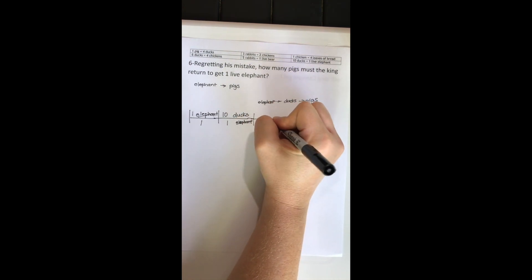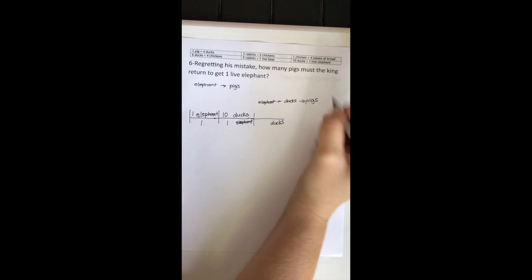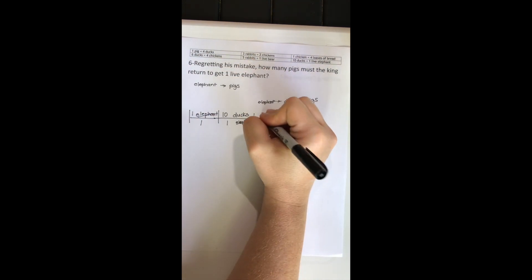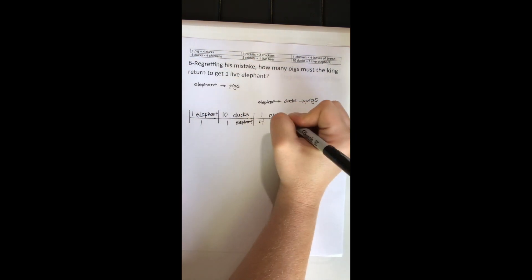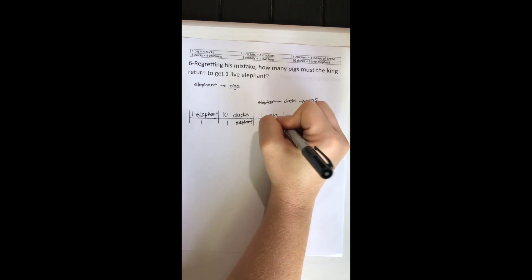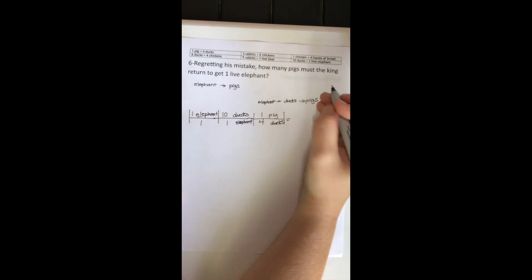Ducks on top, ducks on bottom. This time it's four ducks equal to one pig. Ducks will cancel out, I finally have the units I was trying to get to, which is pigs. Multiply all the way across the top, multiply all the way across the bottom.